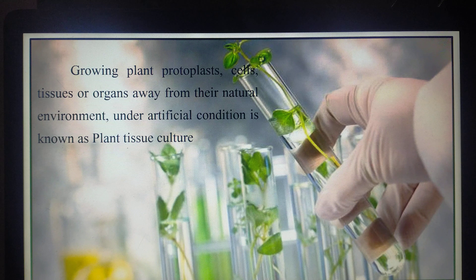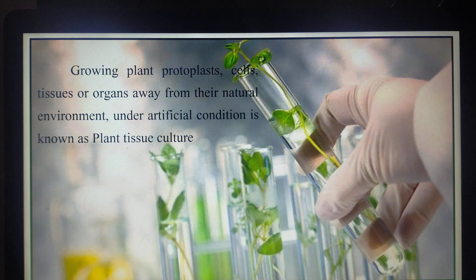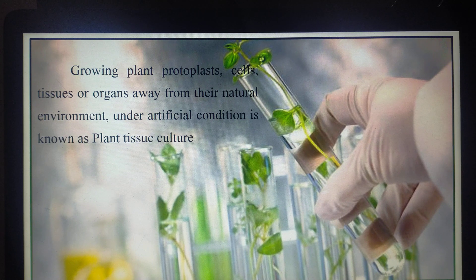Tissue is nothing but a group of cells which are common in their function. If you take a plant body, the entire plant has tissues. If you take a leaf, it has mesophyll tissue, xylem tissue, phloem tissue, spongy parenchyma, and epidermal tissue — different types of tissues are present in leaf, stem, and root everywhere. All multicellular organisms' bodies are made up of tissues, and likewise the plants also have tissues.